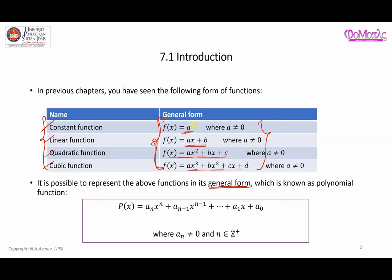If you have a constant function, it can be written in this general form where everything else is zero — for example, a_n equals zero, and so on — leaving just a_0, which is the constant term. Similarly, for f(x) = ax + b, the linear function, it can be written with all higher terms equal to zero, leaving just a_1 x plus a_0, which is equivalent to ax plus b.